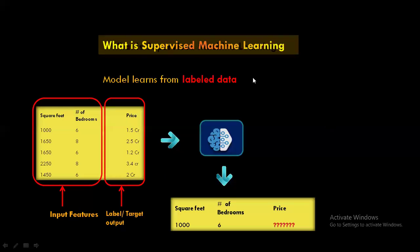Remember, the term supervised machine learning means you need to train your model with a labeled output feature. Without a labeled output feature, you cannot train your model. If you don't have a labeled output feature, either you need to derive it based on some business rule and then train your model. If you cannot derive the labeled output feature and have unlabeled data, you have to use another technique called unsupervised machine learning, which we will discuss later.